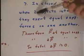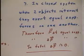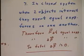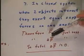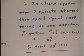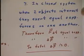In a closed system, when two objects interact, they exert equal and opposite forces on one another. It follows that our f delta t contributions are equal and opposite, so our change in momentum is equal and opposite, and our total change in momentum is zero.